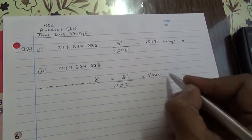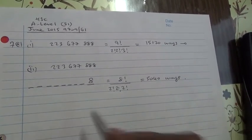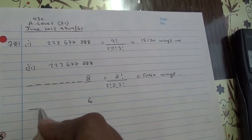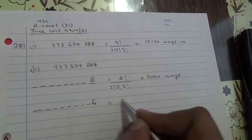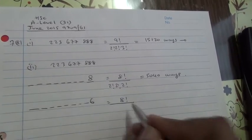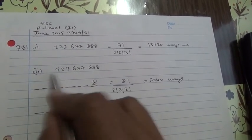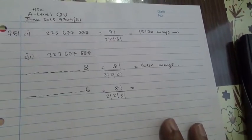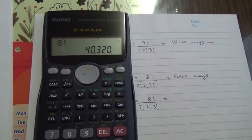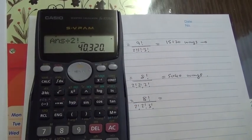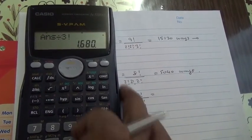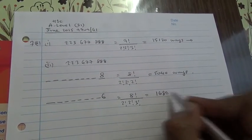Now the second scenario: the number can end with a 6 to become an even number. So placing a 6 at the end, we again have 8 remaining numbers — factorial of 8. The 6 has been taken away, so three 8s repeat: divide by 3 factorial. Two 7s divide by 2 factorial. Two 2s divide by 2 factorial. That is 8! / (2! · 2! · 3!) = 1,680 ways.